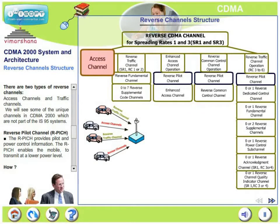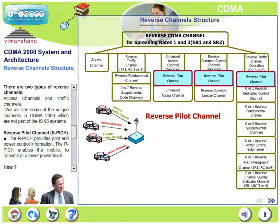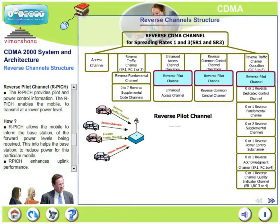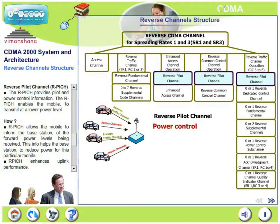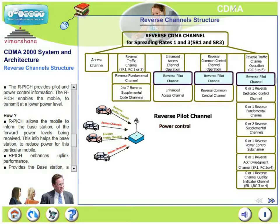There are two types of reverse channels: access channels and traffic channels. We will see some unique channels in CDMA 2000 which are not part of IS-95 systems. The reverse pilot channel provides pilot and power control information. This is unique to CDMA 2000 and not present in IS-95. It helps the base station perform coherent demodulation.